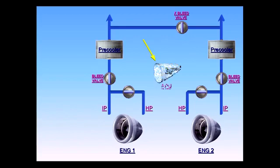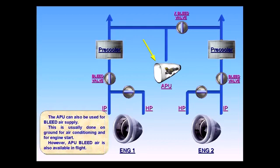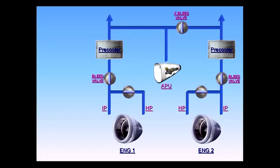The APU can also be used for bleed air supply. This is usually done on the ground for air conditioning and for engine start. However, APU bleed air is also available in flight. APU bleed air is controlled by the APU bleed valve, which operates as a shut-off valve.